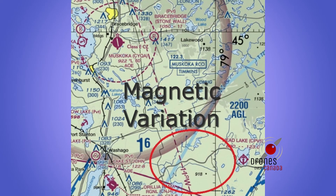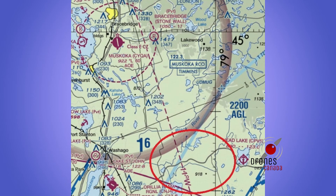As we discussed on our Drones Over Canada navigation episode — episode 7 — magnetic variation is the variation between magnetic north and true north, and it varies depending on where you are on earth. VFR navigation charts use a red dashed line to denote variation. I've circled it here on the chart — you'll see it periodically, and that's the easiest way to determine your variation so you can convert between true north and magnetic north.